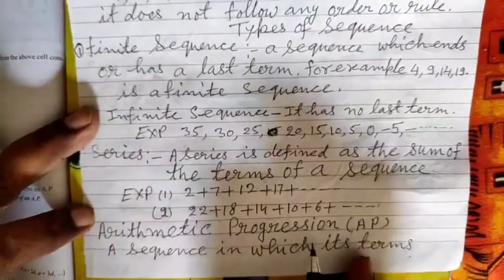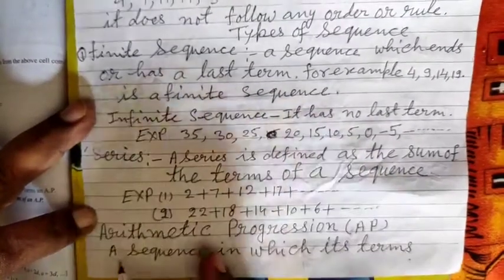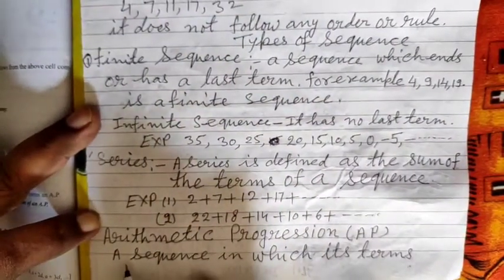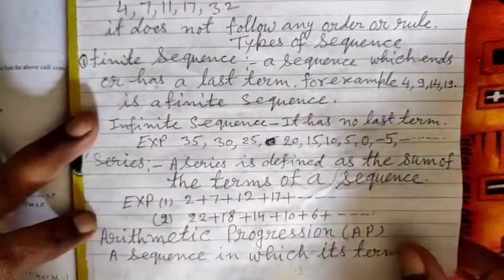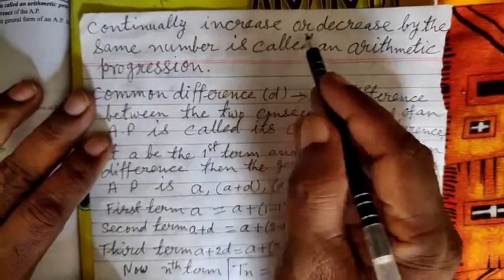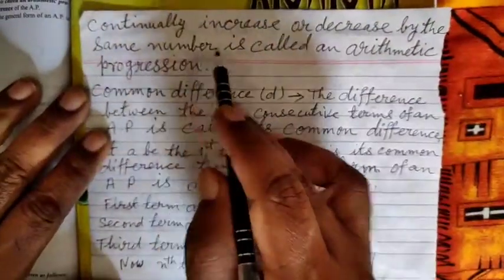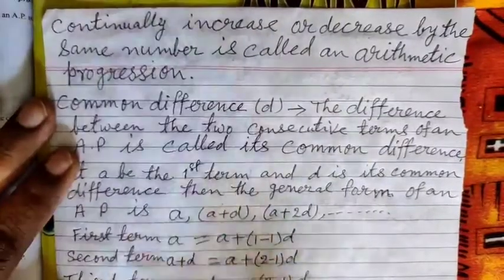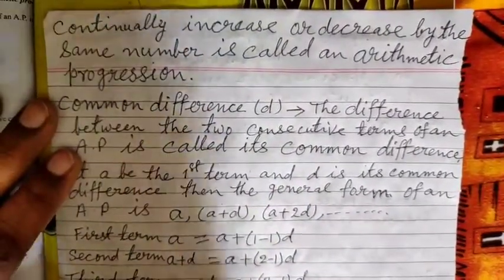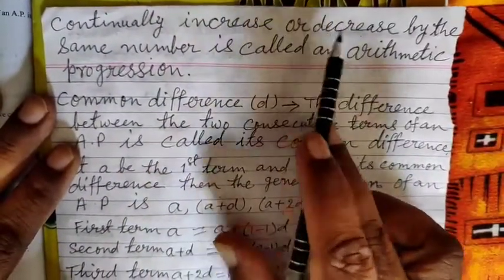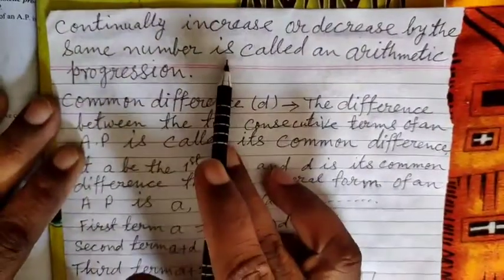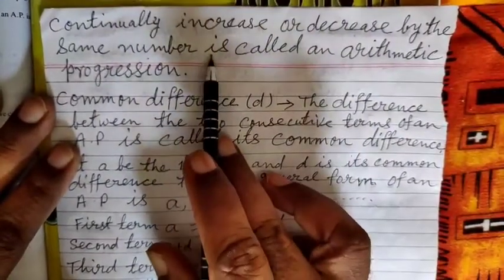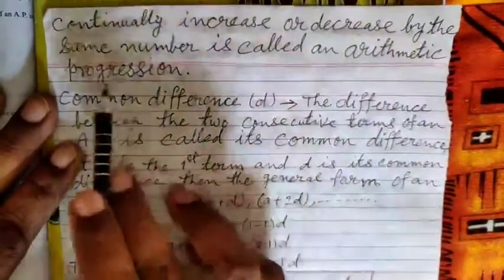Now the question is: what is Arithmetic Progression? Arithmetic Progression — which in Hindi is called Samantar Shreni — is a sequence in which its terms continually increase or decrease by the same number. That is, the succeeding term either increases or decreases by a fixed number. This type of progression is called an Arithmetic Progression.